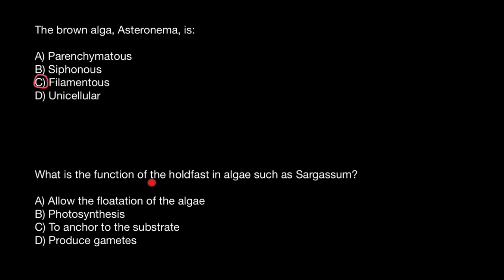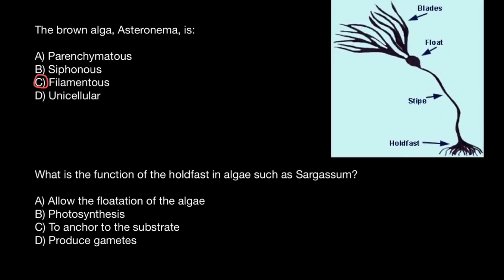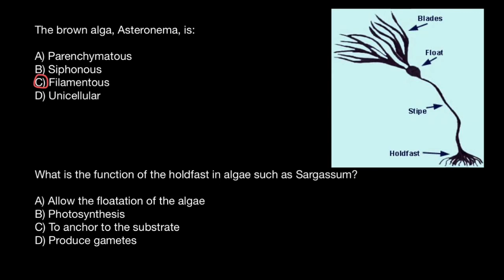The second question: what is the function of the holdfast in algae such as Sargassum? Here is the simplified structure of Sargassum. As you see, holdfast performs the function of a root, but only from the point of view of anchoring to the substrate, because it does not perform other functions of terrestrial plants — such as uptake of nutrients and water, transportation, or accumulation of different products such as starch and sugars. In aquatic plants, holdfast only performs the single function of anchoring the plant to the substrate.